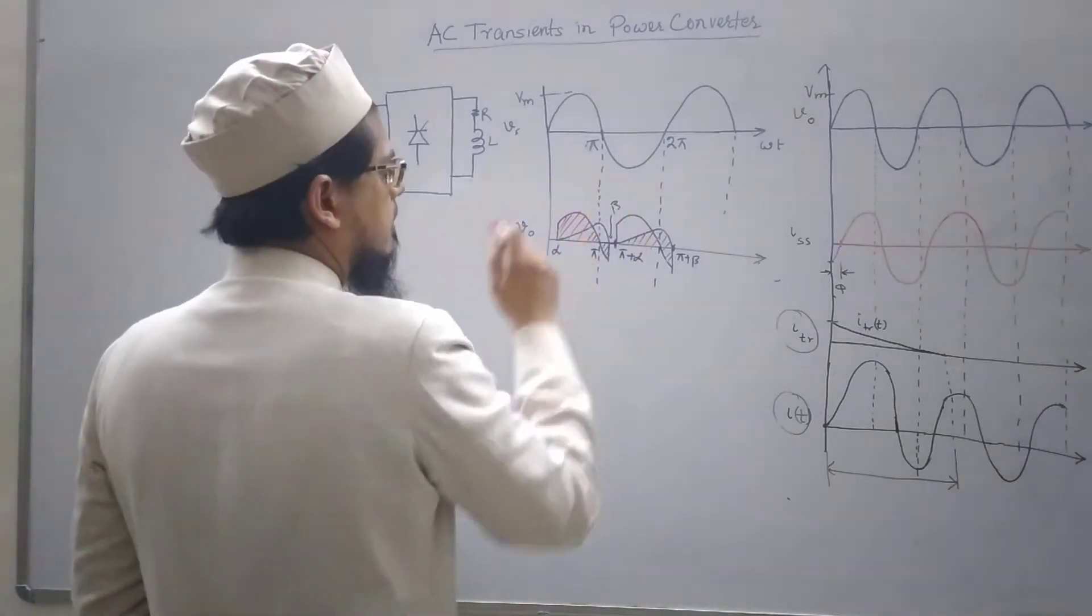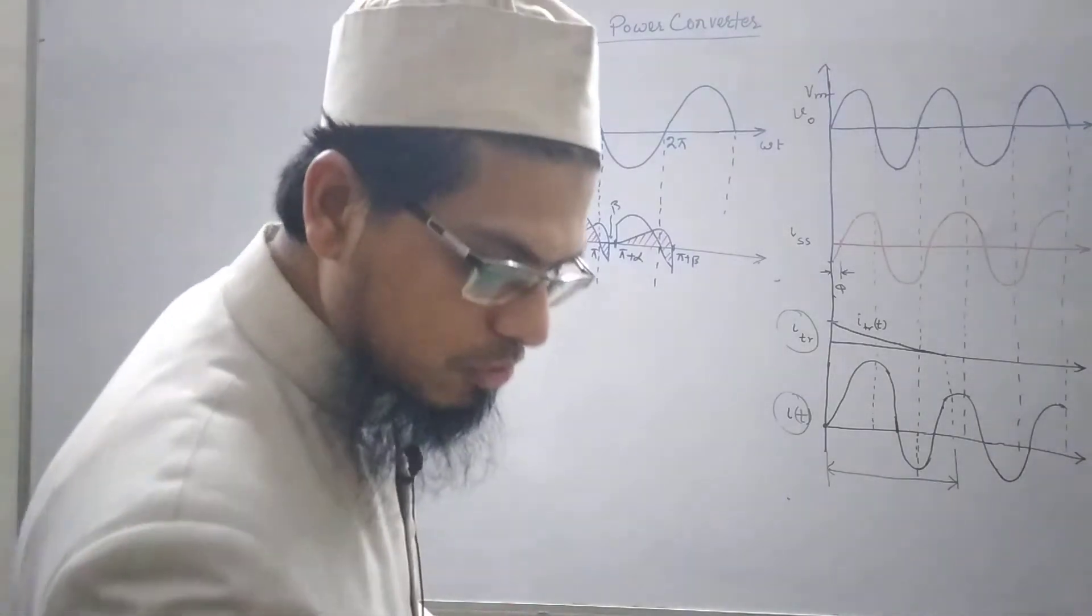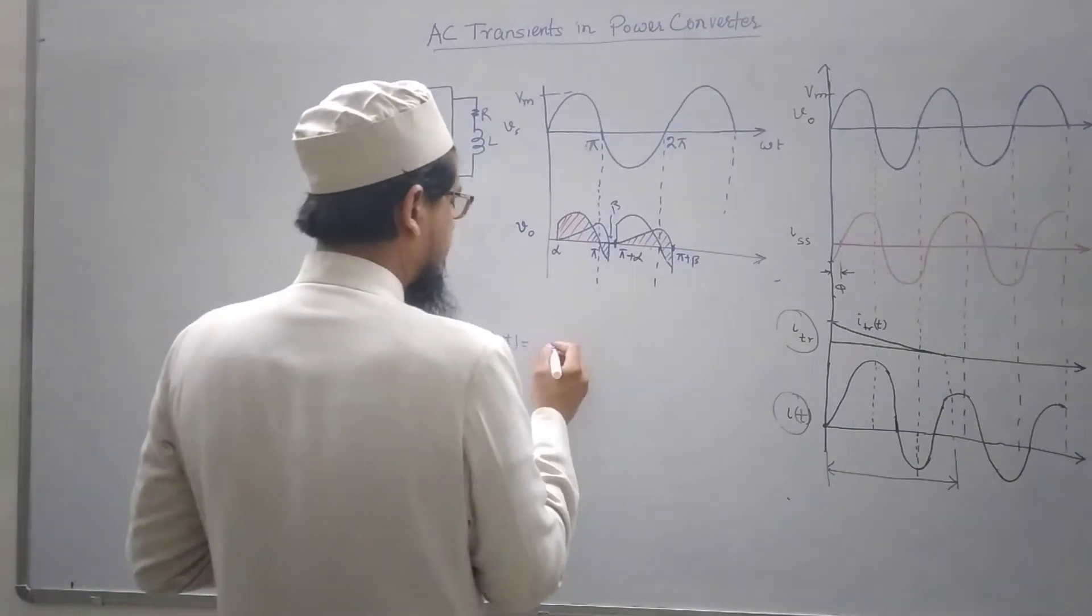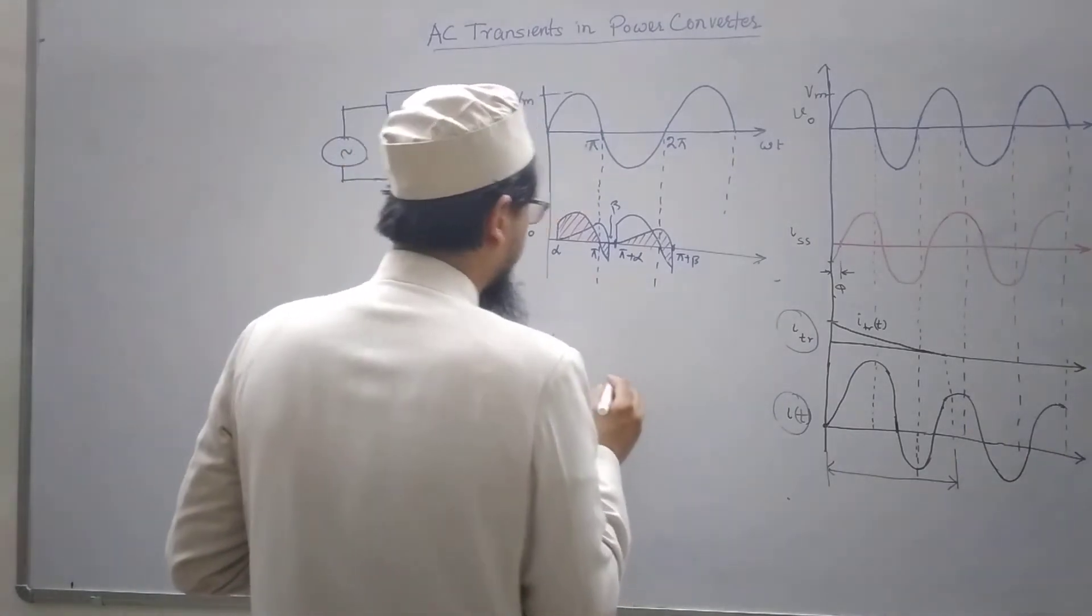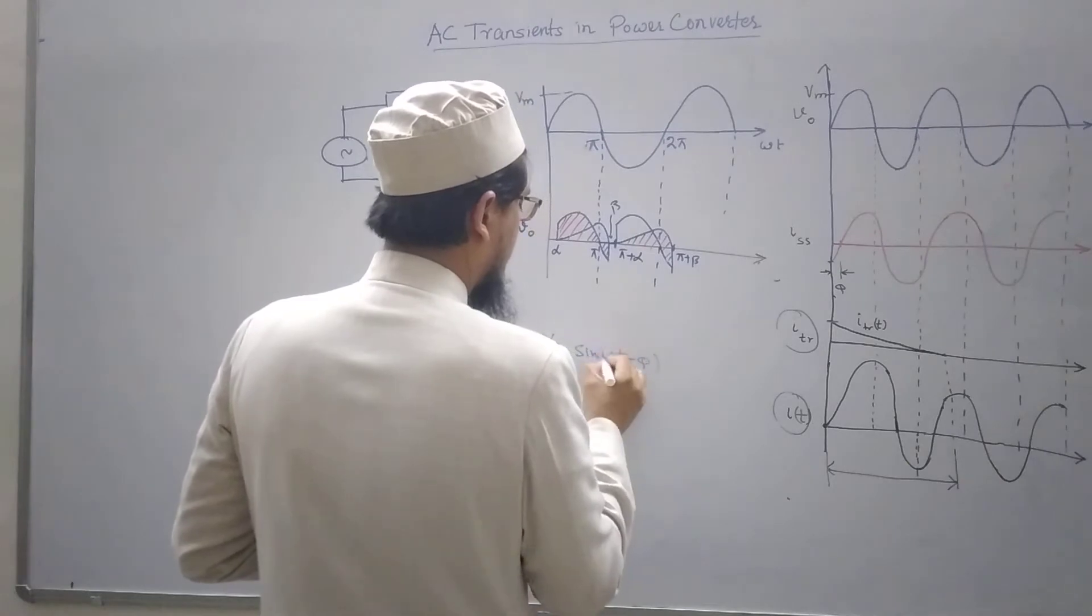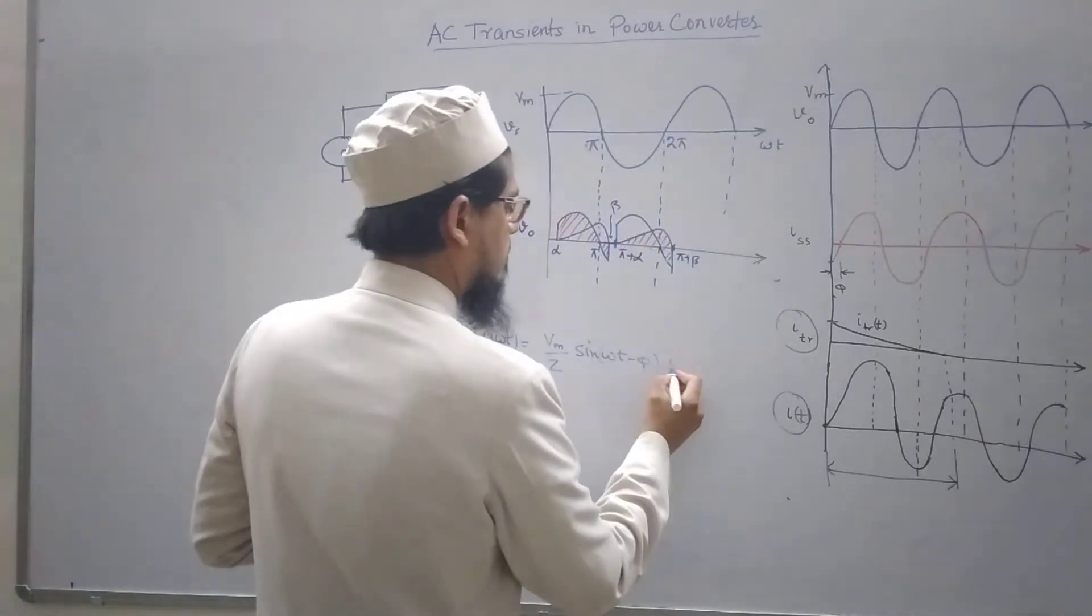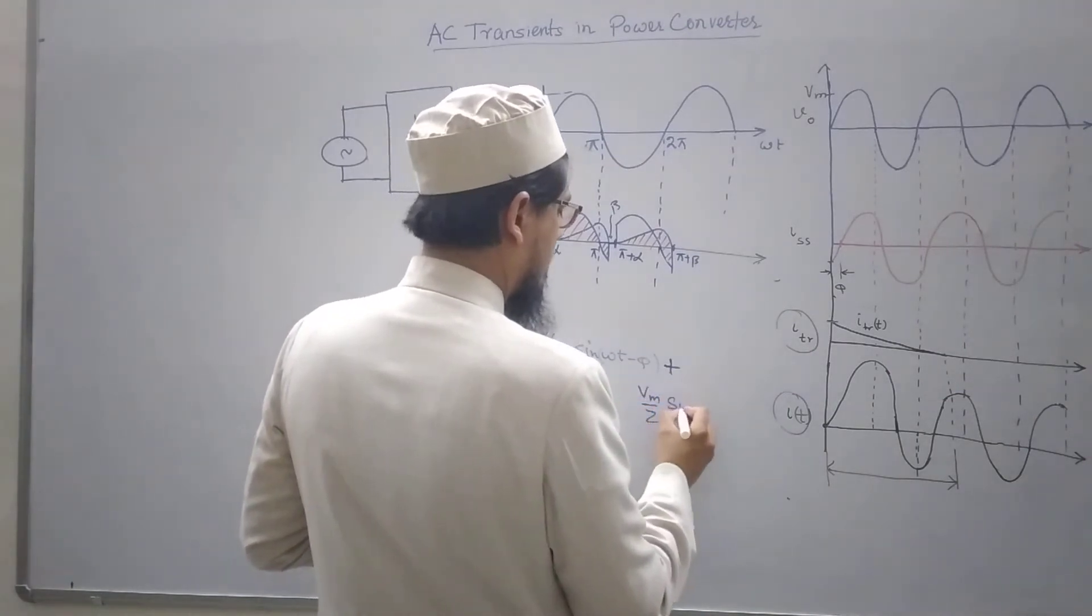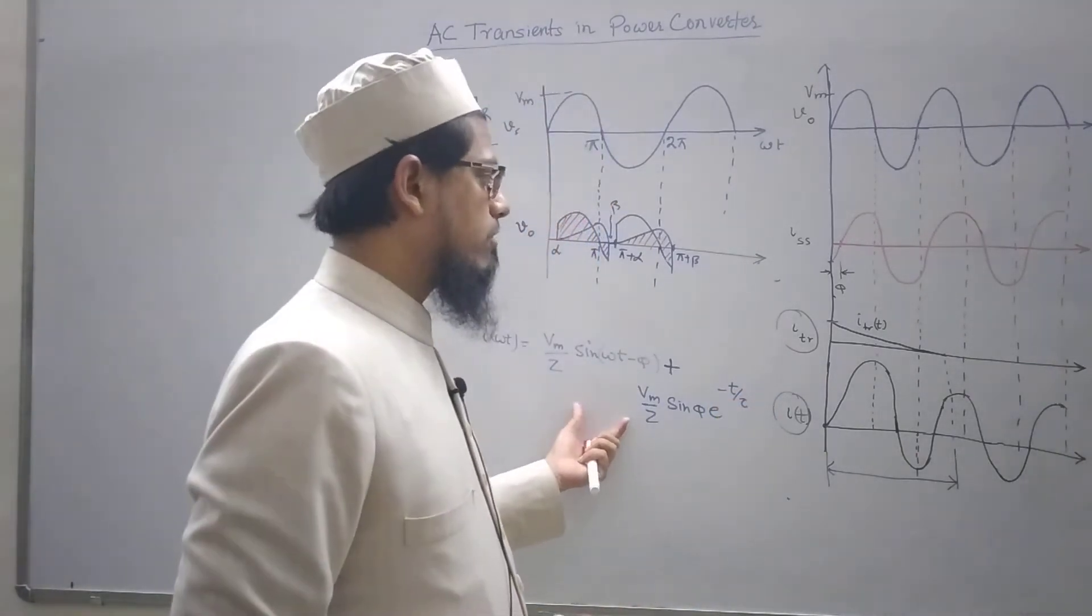We can find out the value of beta. How? We know that the current I omega t equals Vm by z, sin omega t minus phi plus then again I have got this Vm by z sin phi e to the power minus t by tau. Will this be the expression of current in this case?